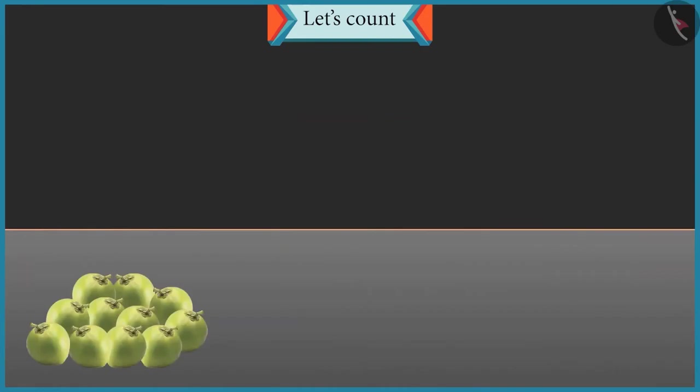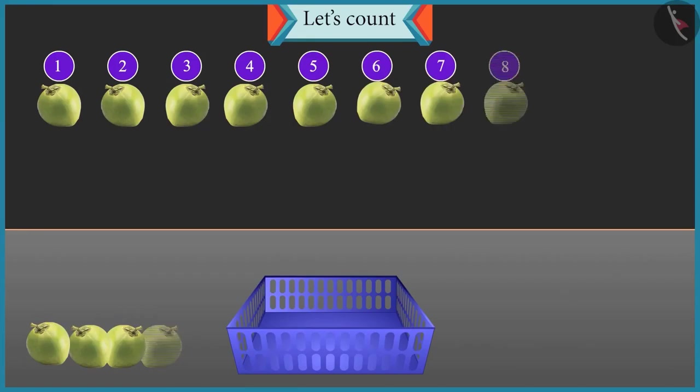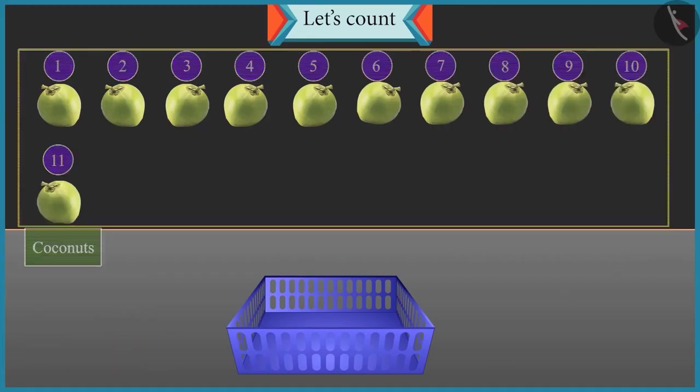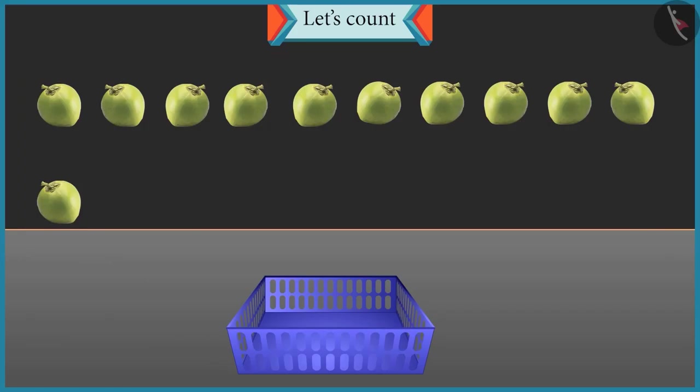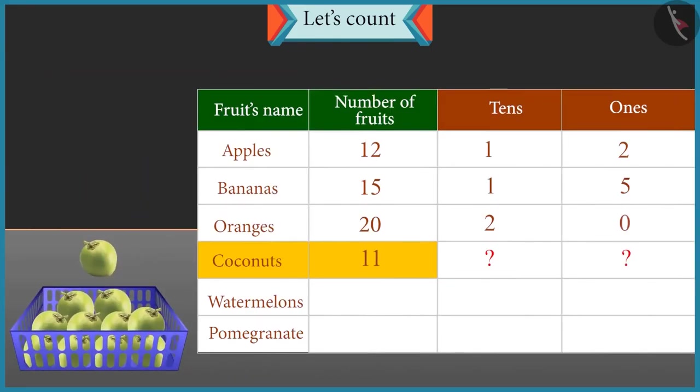Now count these coconuts and place them in the basket. Okay. 1, 2, 3, 4, 5, 6, 7, 8, 9, 10 and 11. So how many groups of 10 coconuts are there? And how many single coconuts are left? There is 1 group of 10 coconuts and 1 single coconut left. So it will be 1 tens and 1 ones in 11. Absolutely right.